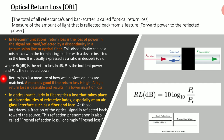Return loss is a measure of how well devices or lines are matched. A match is good if the return loss is high. A high return loss is desirable and results in a lower insertion loss. In optics, particularly in fiber optics, loss takes place at discontinuities of refractive indices — meaning wherever there is a change in the medium, there is a change in the refractive index, creating discontinuities.